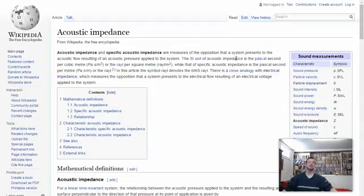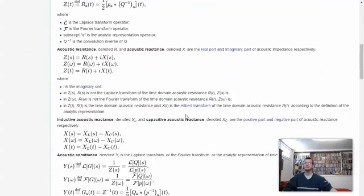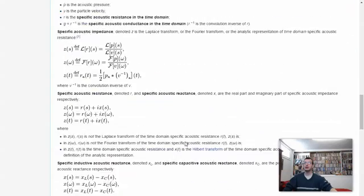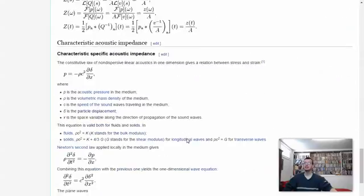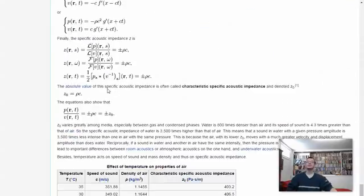Measures the opposition that a system represents to the acoustic flow resulting in an acoustic pressure applied to the system. That's not what I want. I want something much simpler. Let's see, related to the density, maybe. Aha, here we go. The absolute value of the specific acoustic impedance is often called the characteristic specific acoustic impedance, and is denoted Z naught. So we're just going to use rho times C.